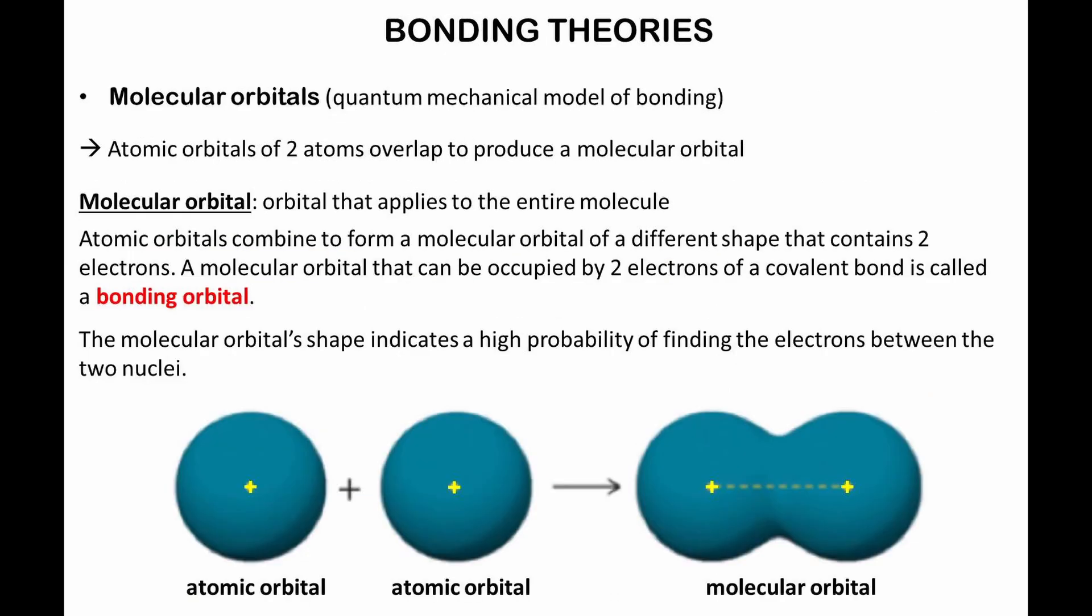There are different bonding theories for covalent bonds. The quantum mechanical model of bonding describes that atomic orbitals of two atoms overlap to produce a molecular orbital. The molecular orbital has a different shape and applies to the entire molecule. A molecular orbital that can be occupied by two electrons of a covalent bond is called a bonding orbital. The molecular orbital's shape indicates a high probability of finding the electrons between the two nuclei, as shown in the figure below.